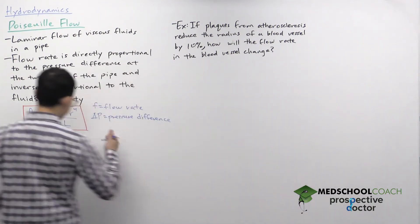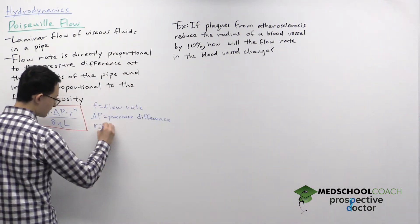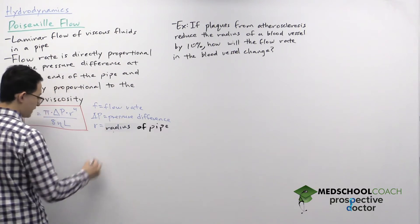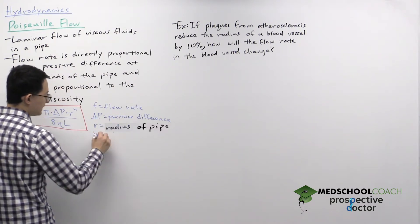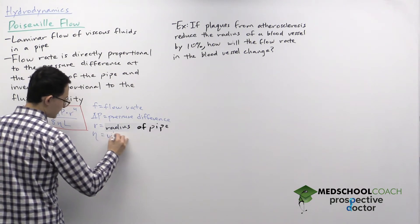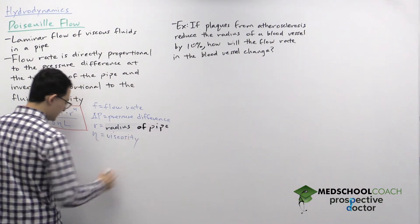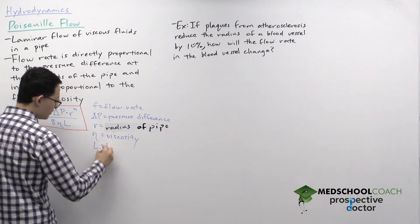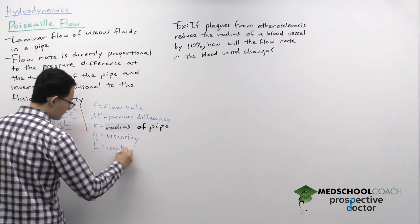R is the radius, the radius of the pipe. We have eta, η is the viscosity coefficient. You can think of this as viscosity. And we also have L, which is the length of the pipe.